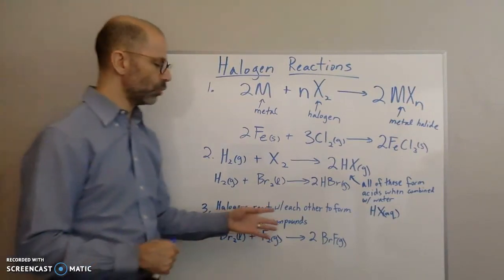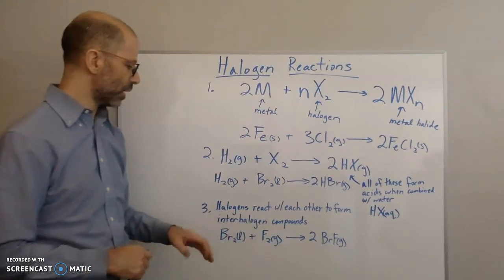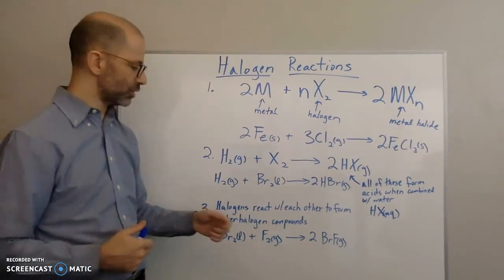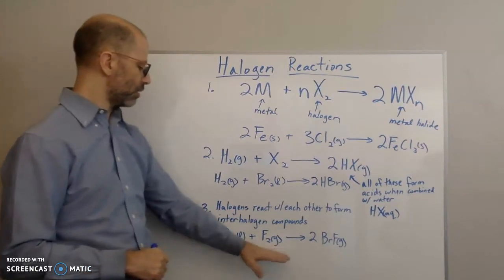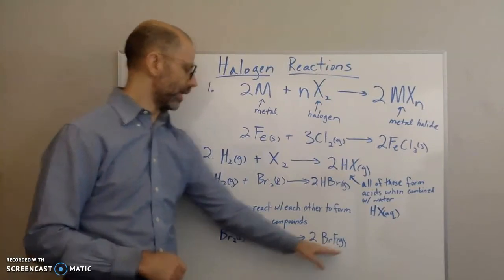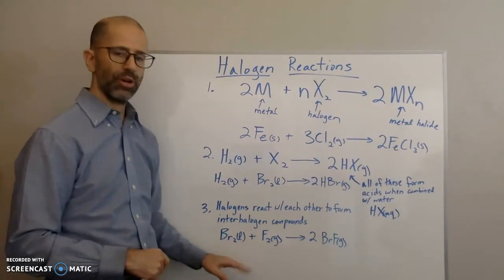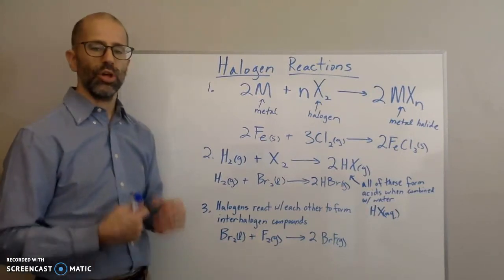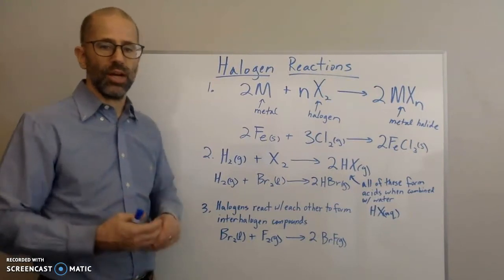So that's the second type of reaction. The third is that halogens will react with each other to form interhalogen compounds, where you have the halogens bonded together. An example would be bromine liquid plus fluorine gas, and then you get BrF gas.